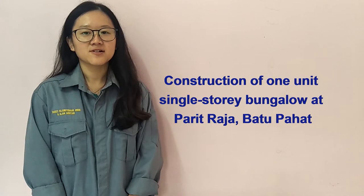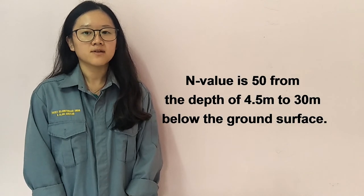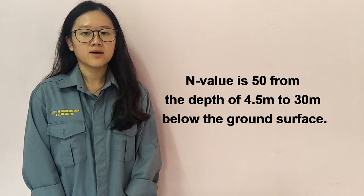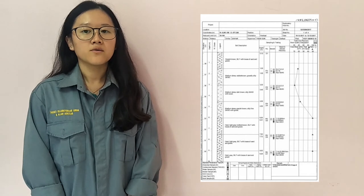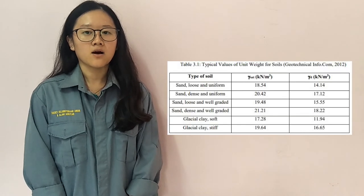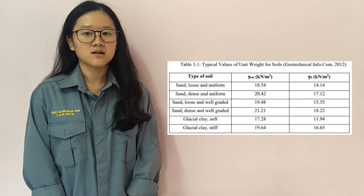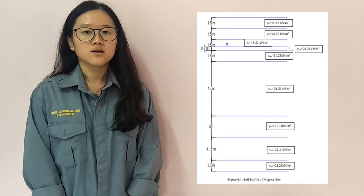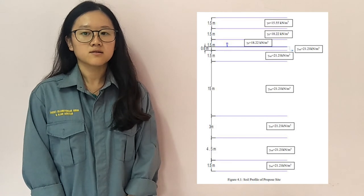This construction is to construct a one-unit single-story bungalow at Bairaja, Batu Bahan. According to the borehole log, the N value is 50 from the depth of 4.5m to 30m below the ground surface. Based on the soil distribution from the borehole log, we can identify the unit weight values for each soil layer by referring to geotechnical references. A soil profile is then plotted. The water level of this construction area is 3.9m below the ground surface.